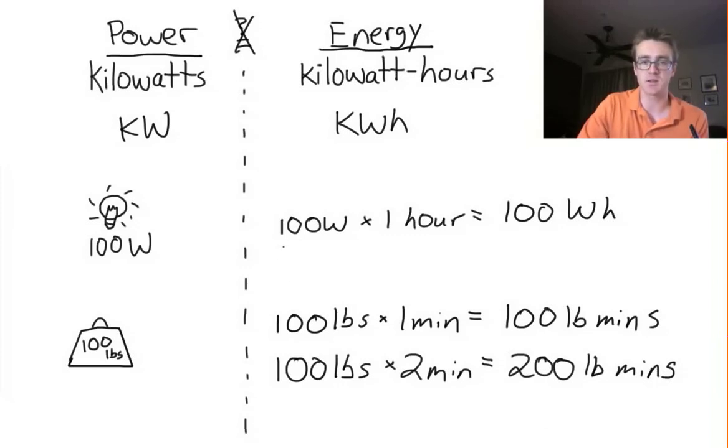By the same token, let's say we wanted to power our light bulb for twice as long. We'll take 100 watts times two hours. We get 200 watt-hours of energy required.